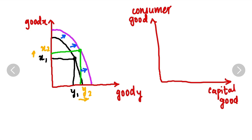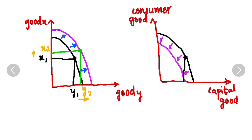If, for example, there has been a war or some natural disaster and resources get depleted, then there will be an inward shift. The original curve shifts inward. You need to show the arrow to indicate direction. Here, Y1 and X1 move down accordingly.